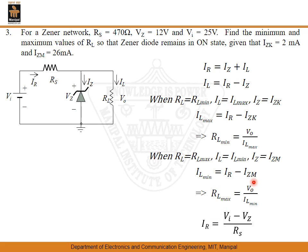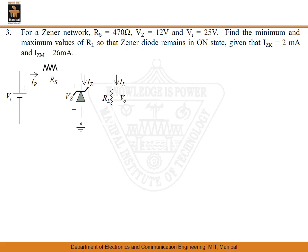To determine all these, IZM is given and IZK is given, but IR needs to be calculated. We apply the formula: IR equals VI minus VZ divided by RS. With VI equal to 25 volts, VZ equal to 12 volts, and RS equal to 470 ohms, IR is 27.66 milli amperes.